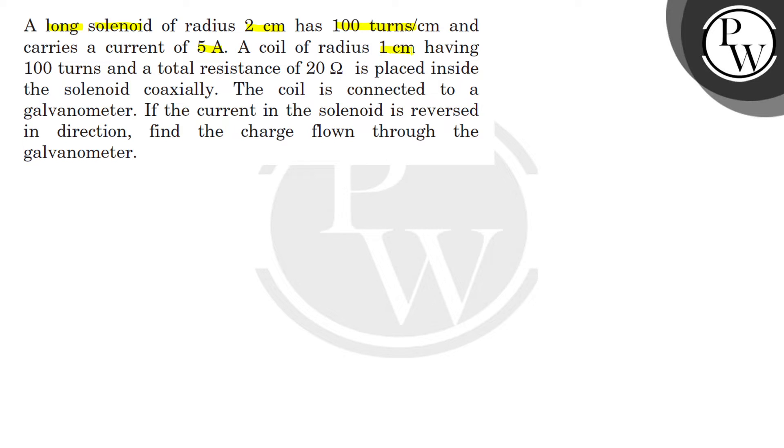A coil of radius 1 cm having 100 turns and a total resistance of 20 Ohm is placed inside the solenoid coaxially.